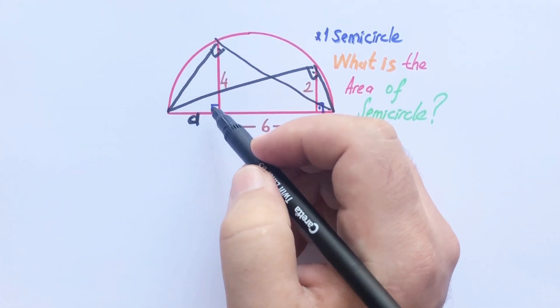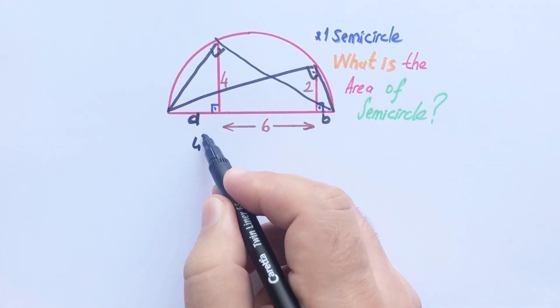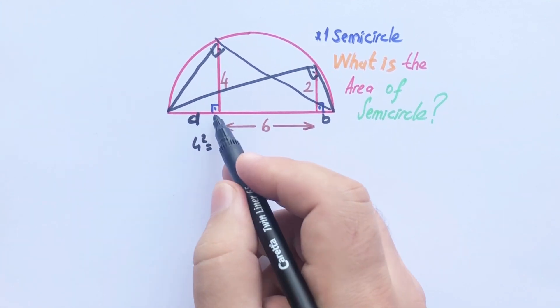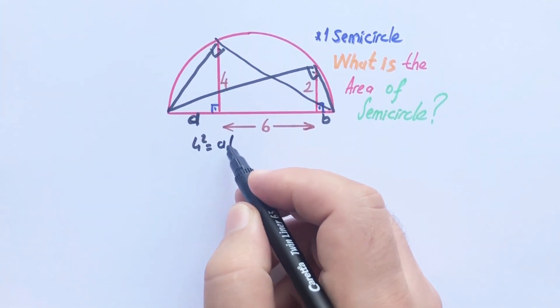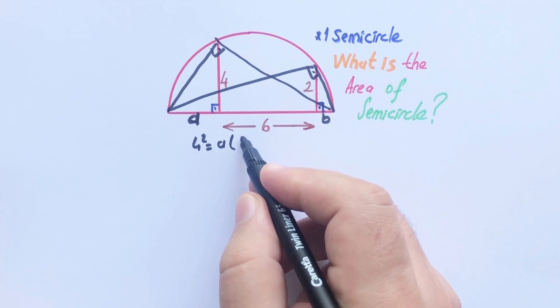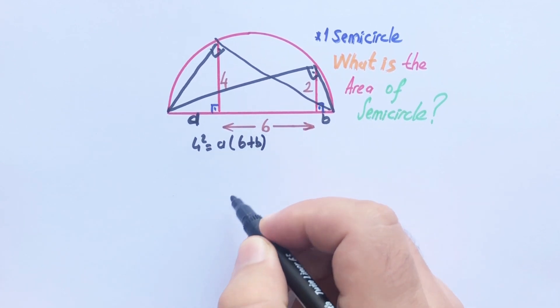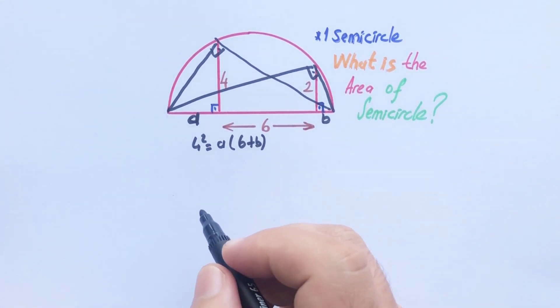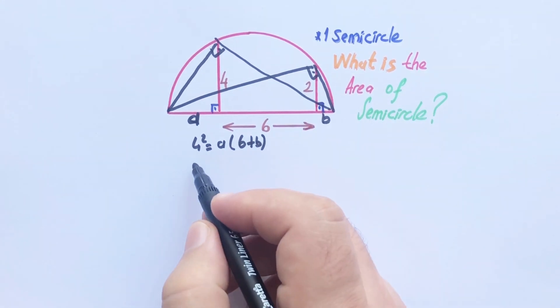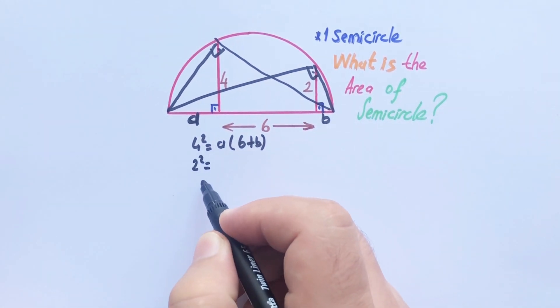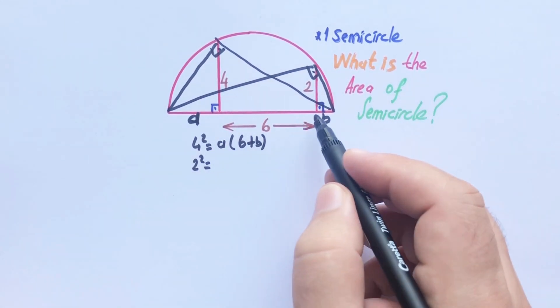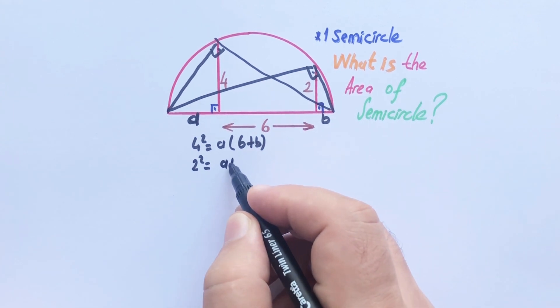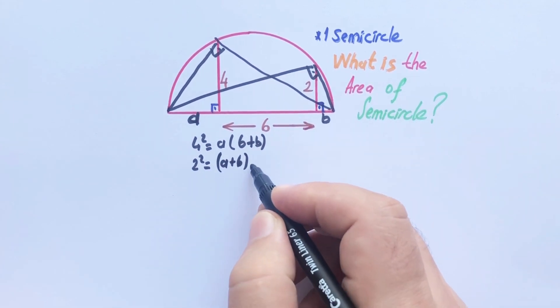In this triangle, if we apply Pythagorean theorem, 4 squared equals a times 6 plus b. For the other triangle, 2 squared equals (a plus 6) times b.